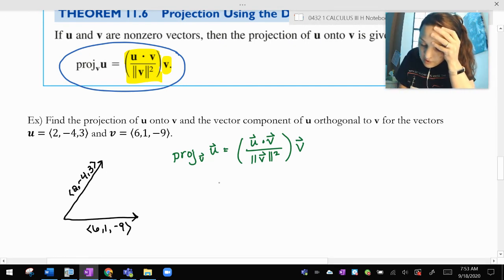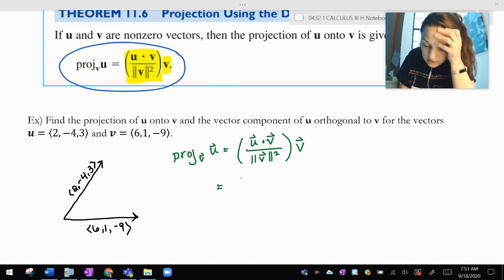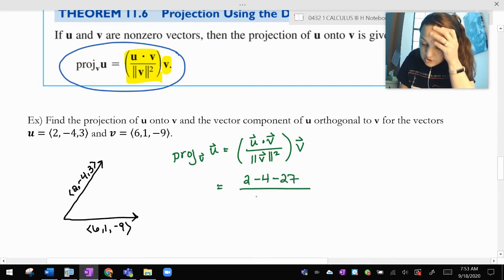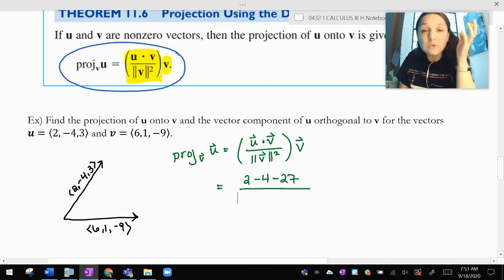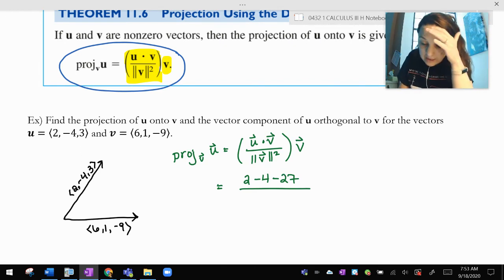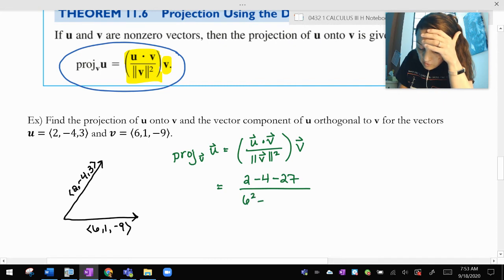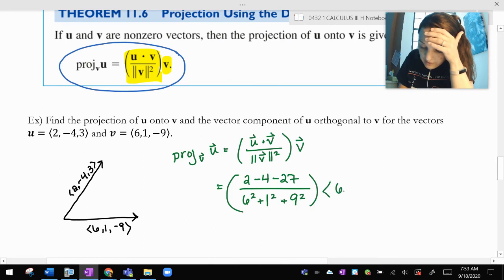All right. The projection of u onto v, now let's use the formula. u dot v goes on top. I know how to do dot products. 12 minus 4 minus 27. That goes on top. Over the magnitude of v squared. So, the magnitude of v squared is really just the components of v squared and added together. So, that's going to be 6 squared plus 1 squared plus 9 squared. And then, I'm going to multiply all of this by vector v, (6, 1, -9).